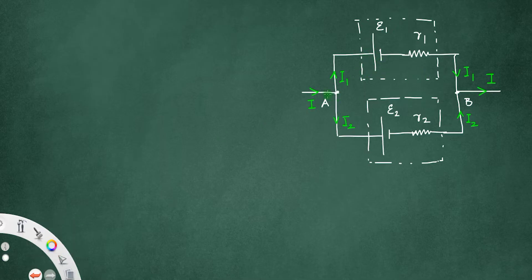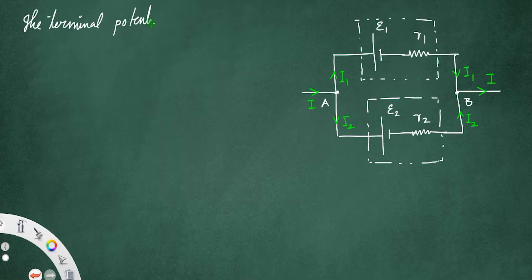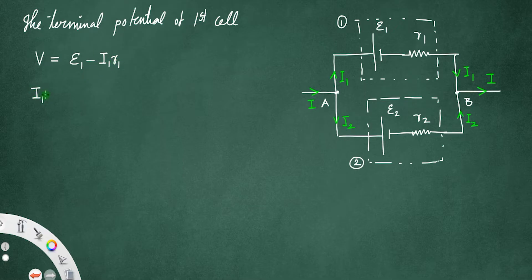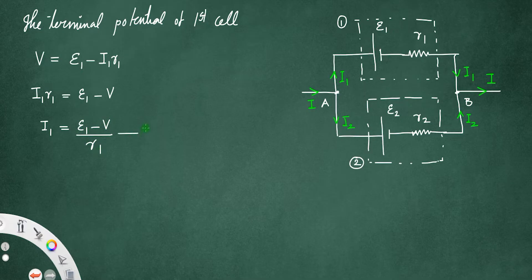The terminal potential — the potential between A and B — let us call that V. For the first cell, the terminal potential is equal to E1 minus I1 R1, that is V = E1 − I1·R1. We have already derived this expression before. From this equation, I1 = (E1 − V) / R1. Let us call this Equation 1.